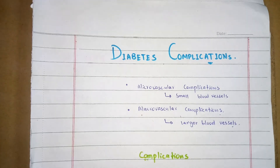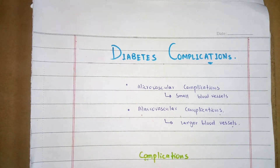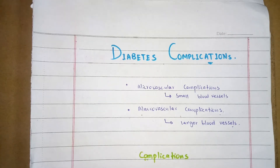Before going to the complications, let me give you the definition of diabetes. Diabetes is basically a hyperglycemic condition of the body — the glucose level in the blood is too high, which may be due to the low production of insulin. Insulin escapes glucose from the blood vessels into the cells for cellular activities, so reduced production of insulin may lead to diabetes.